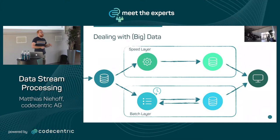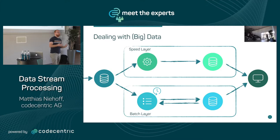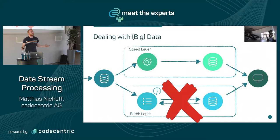The batch layer was mainly there because streaming couldn't be exact — streaming was seen as too slow, only giving an approximate result. We had a batch layer because we wanted correct results, so we had to run it again and again. But by now, streaming is so good and the frameworks are so mature that we can totally rely on streaming for correct results. We don't need batch processing anymore.